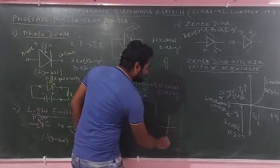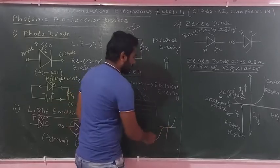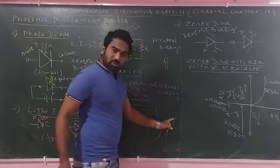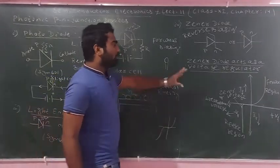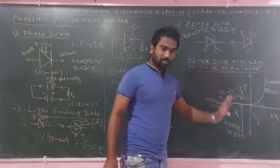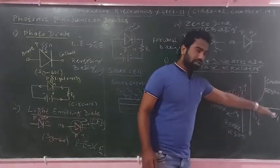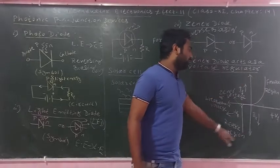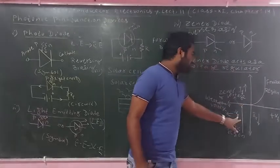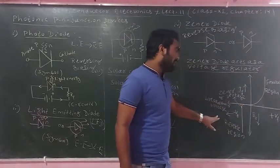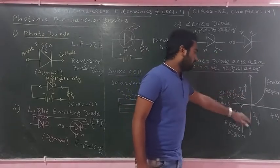The PN junction device has a VI characteristic. The forward region and the reverse region are shown. In the VI characteristic graph, the X axis represents voltage and the Y axis represents current. VF is the forward voltage (positive), VR is the reverse voltage (negative), and IR is the forward current (positive).